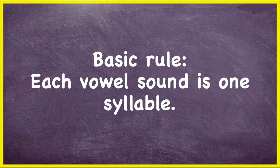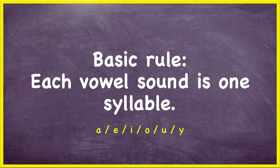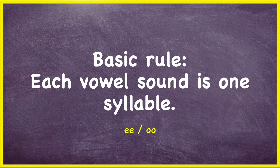The basic rule is simply that each vowel sound is one syllable. To understand this whole lesson, you have to know what a vowel is. So these are the vowels: A, E, I, O, U — and for our purposes here, Y also. Y can be used as a vowel or a consonant, and all the other letters are consonants. But I'm talking about vowel sound, so when we say vowel sound, we don't just mean these single vowels. We also mean the double vowels.